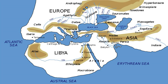In Book III, Herodotus defines Ethiopia as the farthest region of Libya (i.e. Africa): 'where the south declines towards the setting sun lies the country called Ethiopia, the last inhabited land in that direction. Their gold is obtained in great plenty, huge elephants abound, with wild trees of all sorts and ebony, and the men are taller, handsomer, and longer lived than anywhere else.'